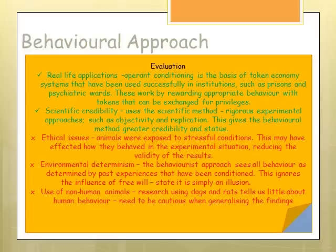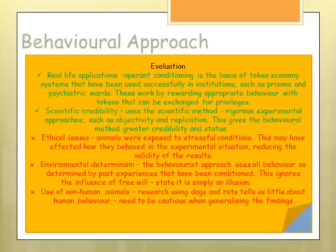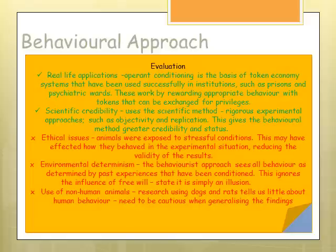There are some ethical issues, particularly with Skinner's research — animals were exposed to stressful conditions, which might affect how they actually behaved and raises questions of validity. Environmental determinism means our behaviour is determined by past experiences that have been conditioned, suggesting free will is just an illusion. Also, using non-human animals such as dogs and rats doesn't tell us much about human behaviour — we need to be cautious when generalising these findings due to humans having higher-functioning brains and far more complex behaviour.